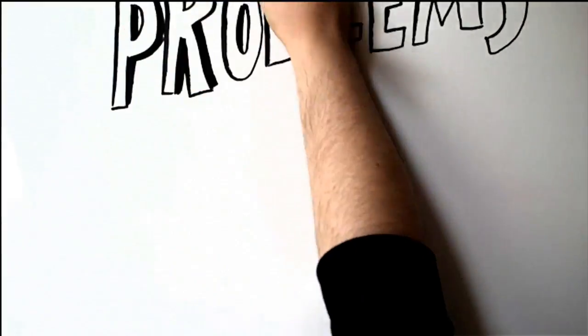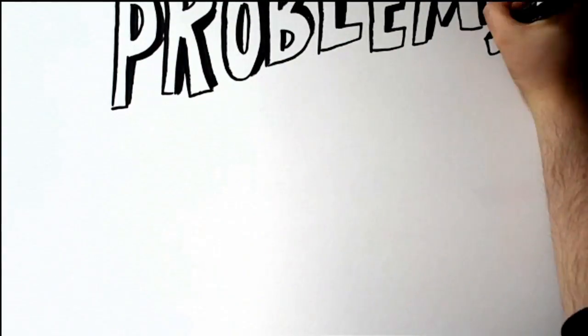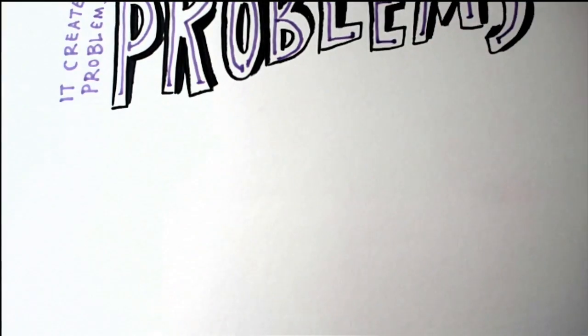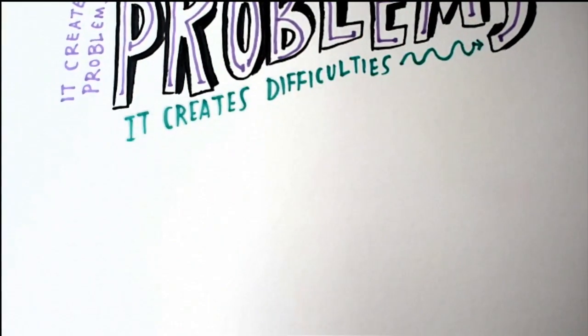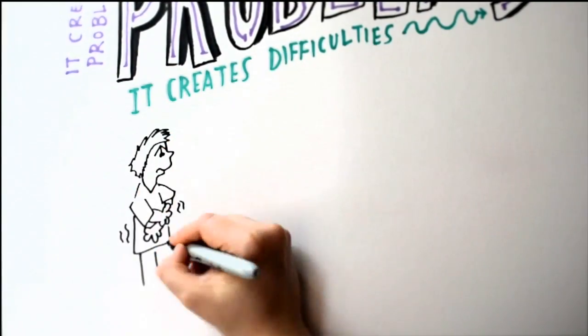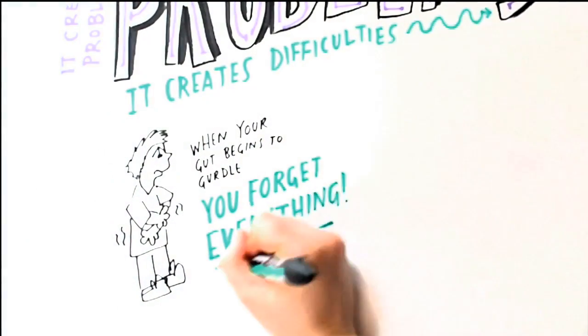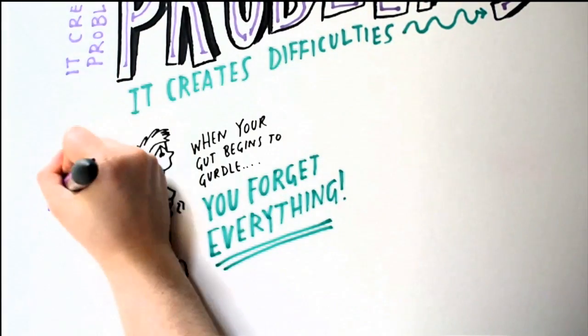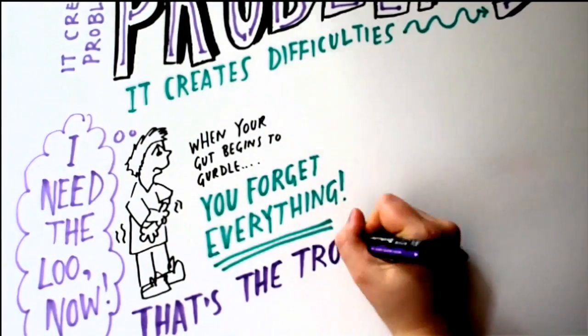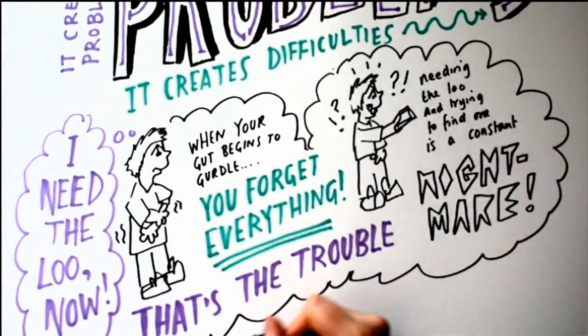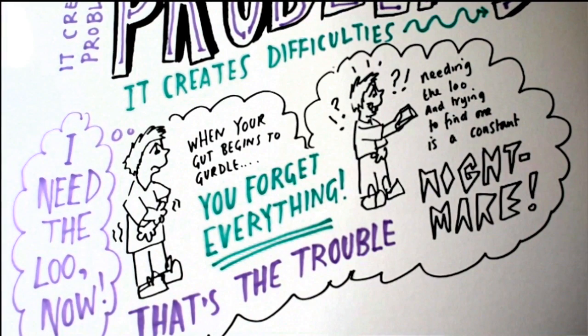Soggy skin and people with profound needs create things like pressure sores and all these things. So it does actually create other difficulties, other problems. But when your guts start to gurgle, believe me, you forget everything else apart from screaming, I need the loo now. And that's the trouble. Needing the loo and finding one is a constant nightmare.